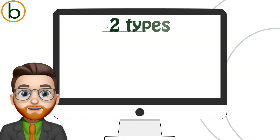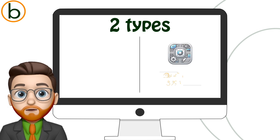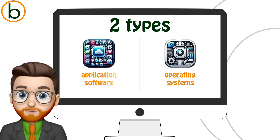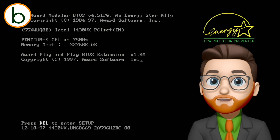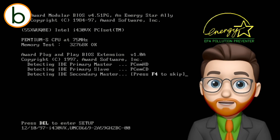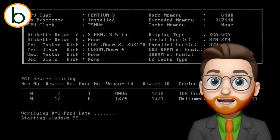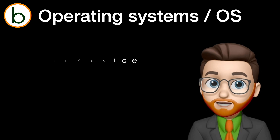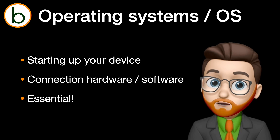All software can be divided into two major types. On the one hand we have the operating system, and on the other hand we have application software. An operating system is the most important software on your device, since it allows your computer, your phone, or your smartwatch to just start up and do its thing. The operating system therefore connects the hardware of your device to all the other applications you use. So without an operating system, your device simply won't work.